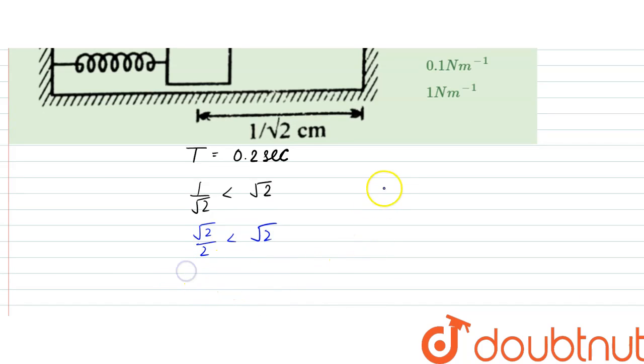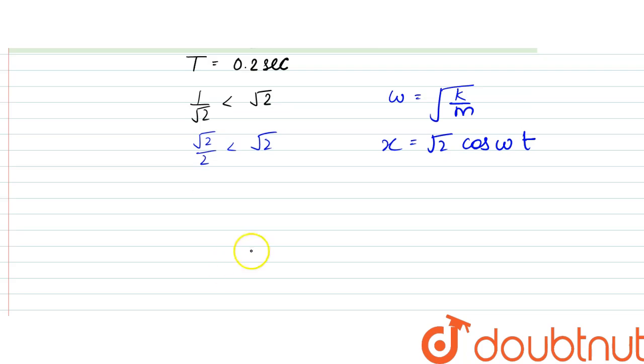Since we know that omega is equal to root of k by m, as well as x is equal to root 2 cos omega t.